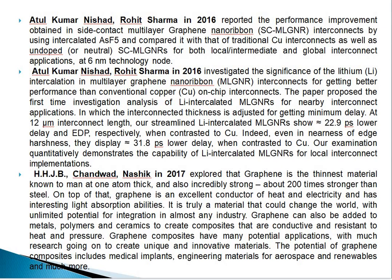In 2017, Chandravanshi explored that graphene is the thinnest material known to man at one atom thick and also incredibly strong — about 200 times stronger than steel. On top of that, graphene is an excellent conductor of heat and electricity and has interesting light absorption abilities. Graphene can also be added to metals, polymers, and ceramics to create composites that are conductive and resistant to heat and pressure, so that it can be used for pressure sensors and gas sensors.